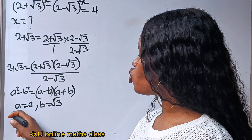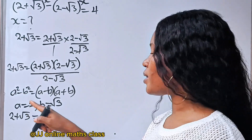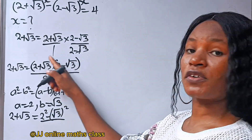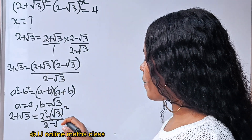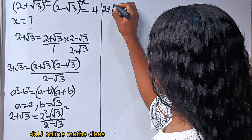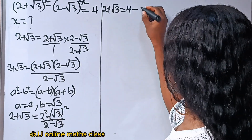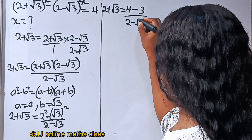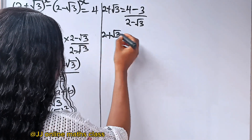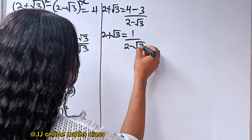So we now have that 2 plus root 3 is equal to a squared minus b squared — that is 2 squared minus root 3 squared — divided by 2 minus root 3. So, 2 squared gives us 4, minus root 3 squared gives us 3, divided by 2 minus root 3. So we have 4 minus 3, which gives us 1, divided by 2 minus root 3.